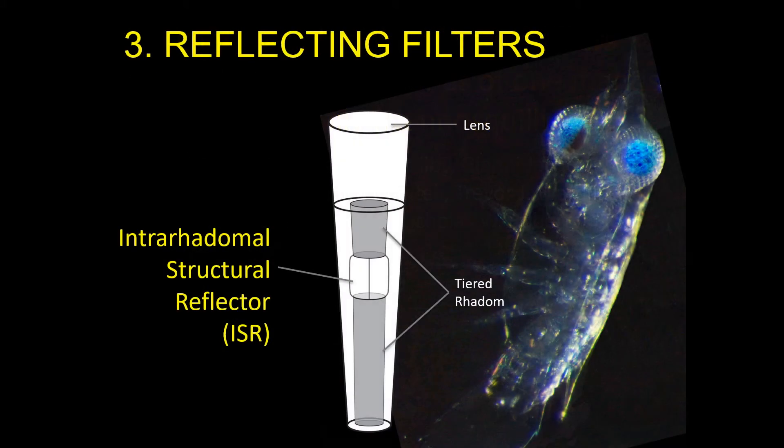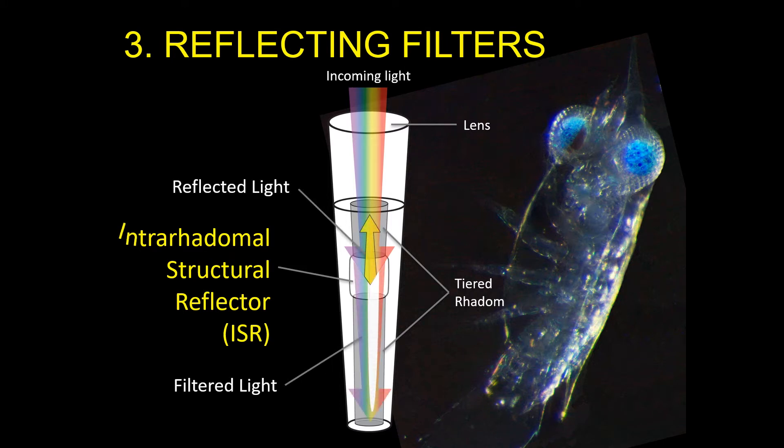In compound eye units that contain these reflecting filters, light entering the eye is simultaneously reflected and filtered onto a tiered rhabdom by a specialized photonic structure called the inter-rhabdomal structural reflector, or ISR.